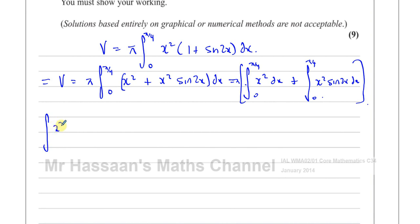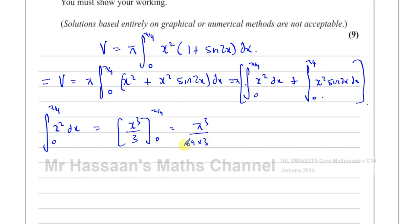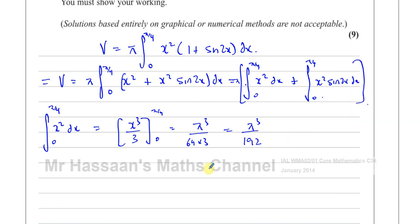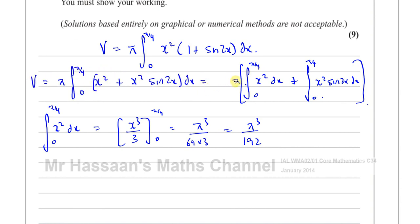The integral of x squared is x cubed over 3, evaluated between pi over 4 and 0. That gives (pi over 4) cubed over 3, which is pi cubed over 64 times 3 — that's pi cubed over 192. Remember, I still need to multiply the whole thing by pi at the end.